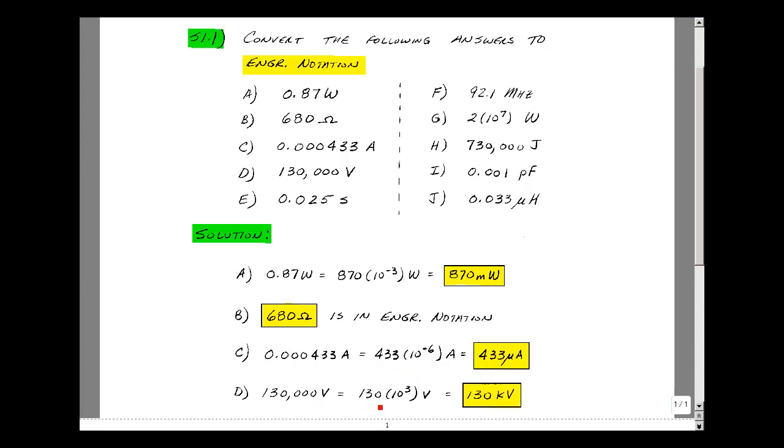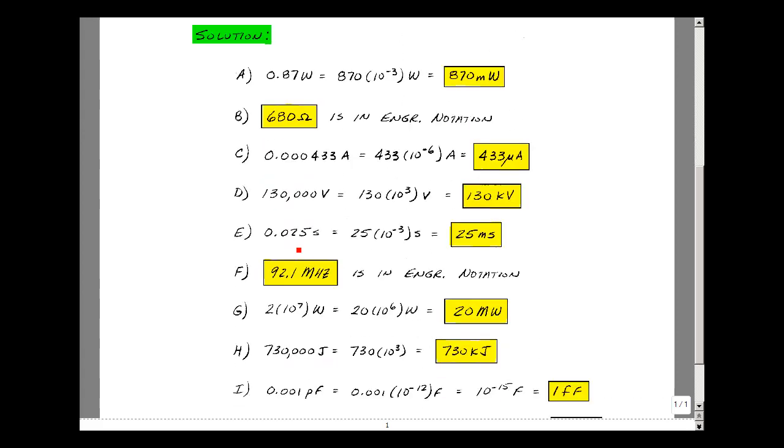130,000. You can write this 130 times 10 to the 3. 10 to the 3 is kilo. 130 kilovolts. 0.025 seconds. Move this over three places. We get 25 times 10 to the minus 3. 10 to the minus 3 again is milli. 25 milliseconds.